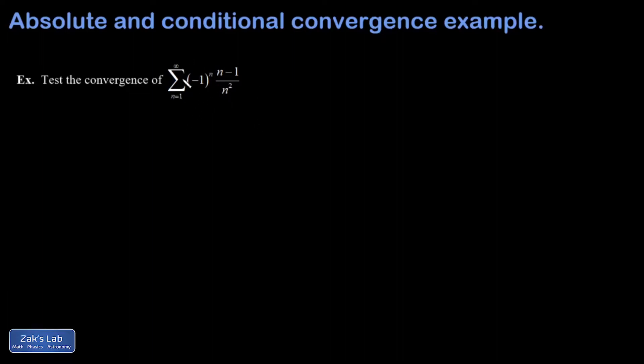Let's test the convergence of this alternating series. The first thing I would do is test for absolute convergence. If I find that, then it also proves the convergence of the ordinary series. To test for absolute convergence, we're just looking at the absolute values of all the terms in this series.